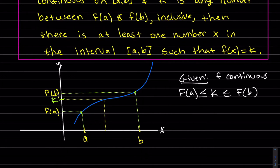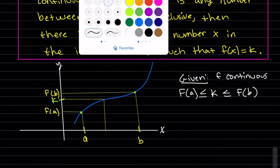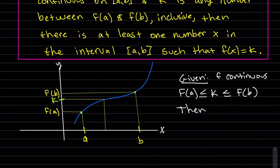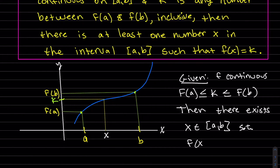So this is what's given: if there's a k in between f(a) and f(b), and we have a continuous graph, then there exists an x in the interval (a, b) — it's inside a, b. There's our x; it's inside there, such that f(x) is equal to k. The output is f(x) and it's equal to k. That's what this says.